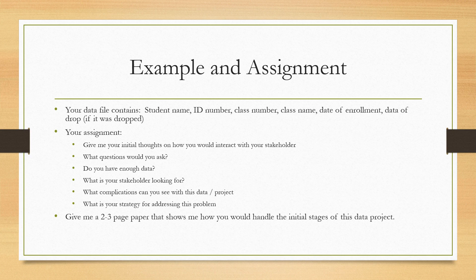Also think about root cause analysis — we had 280 drops out of 3,000 enrollments, that's about 10%. Why did 10% of students drop their classes? Is it just that they weren't interested, or is there something else going on? What kind of additional data might we want to consider to dig deeper and find out more? That is your assignment for the week. Let me know if you have any questions.